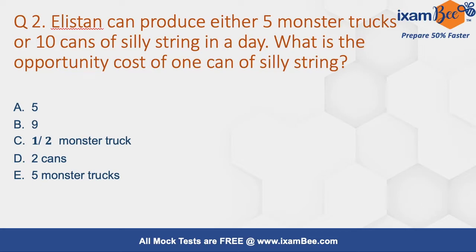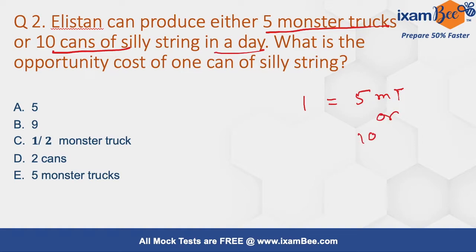Let's see question number two. Elastin can produce five monster trucks or 10 cans in a single day — so in one day, Elastin can produce either five monster trucks or 10 cans. What is the opportunity cost of one can? Here we want to find the opportunity cost.